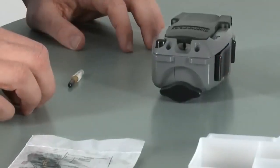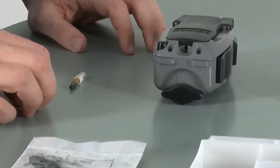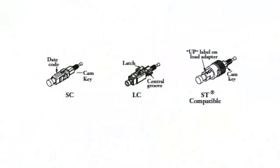Next we will discuss the different UniCam connectors and ensuring that they are ready to be used in our UniCam Tool. First we will talk about the cam key location on the connectors. The connector needs to be in the open cam position when you insert it in the tool. SC connectors are in their open position when the key is 90 degrees from the date code on top.